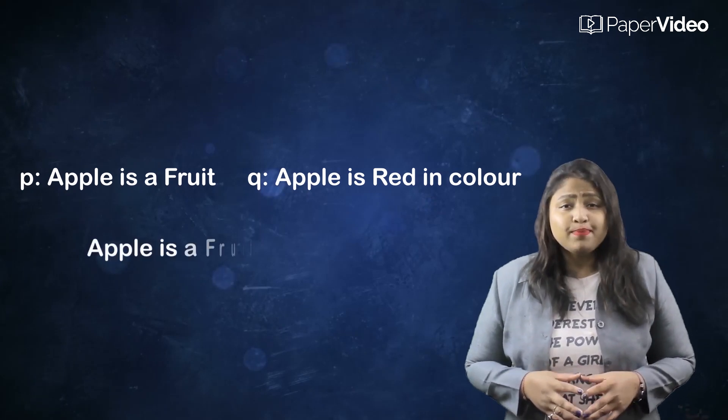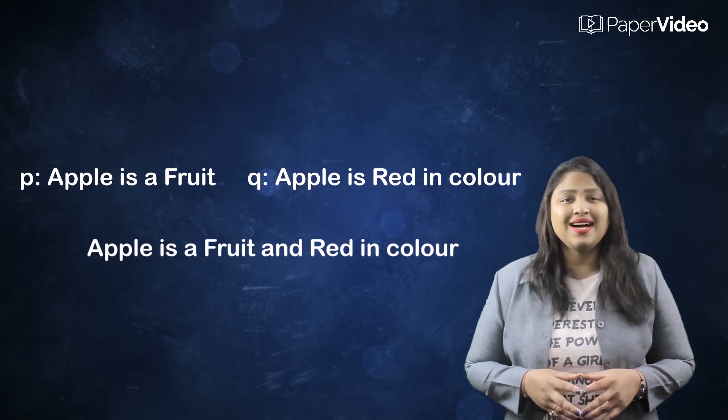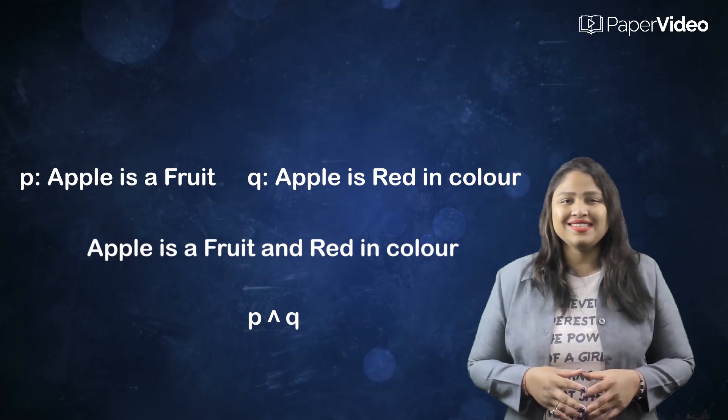So the compound statement using conjunction will be Apple is a fruit and red in color. The symbol that represents conjunction is written like this.